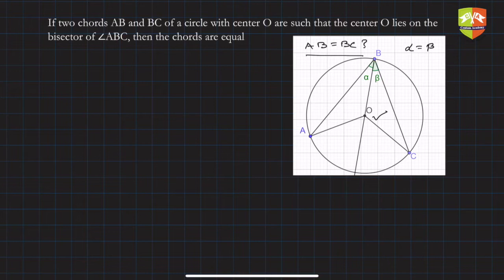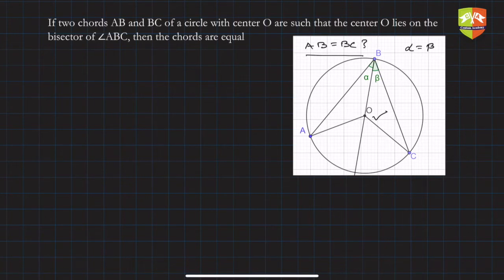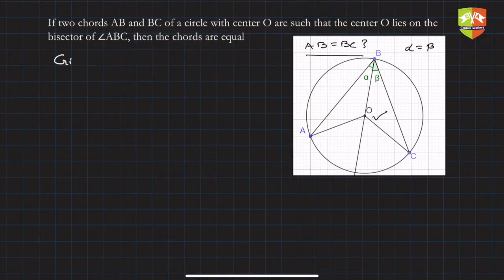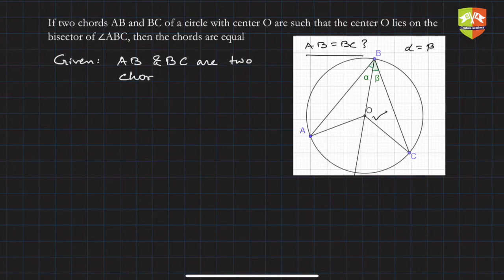To prove AB is equal to BC, if we can somehow prove that the two triangles seen here are congruent, then we can prove that the corresponding sides are equal. Hence, we first join OA and OC to complete the triangles. Now let's write the conventional proof format. Given: AB and BC are two chords of a circle with center O and radius r.